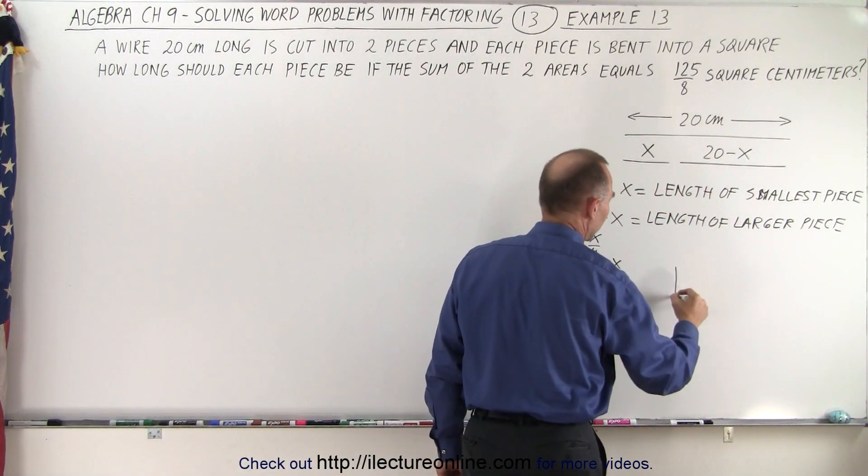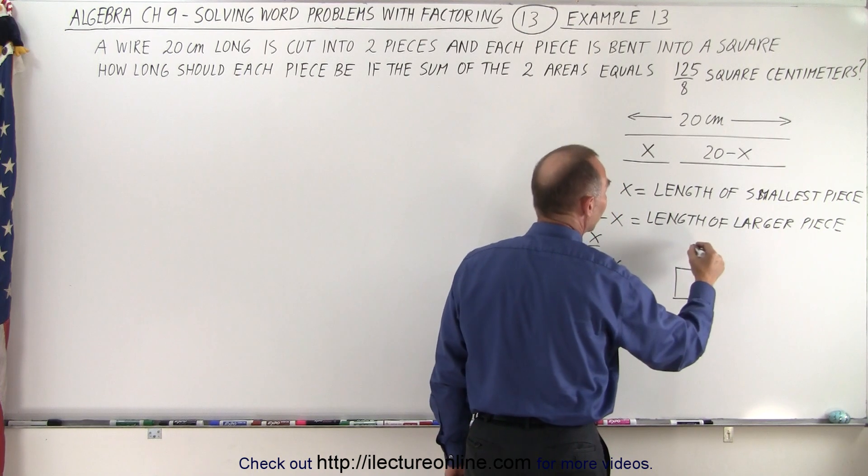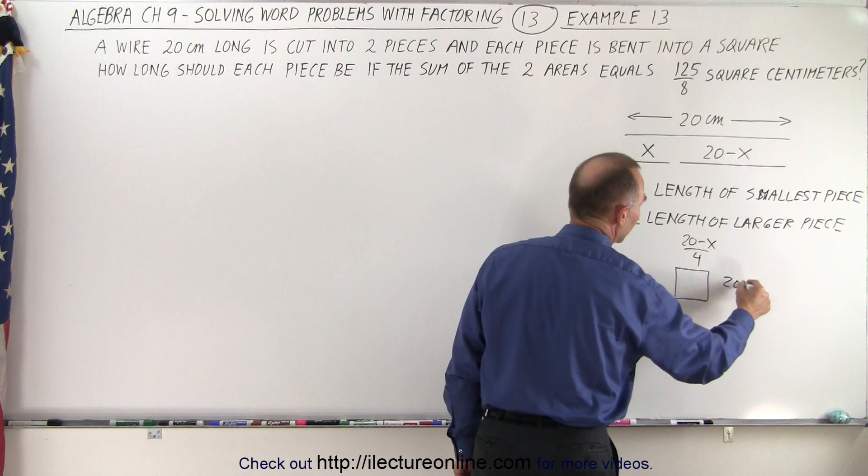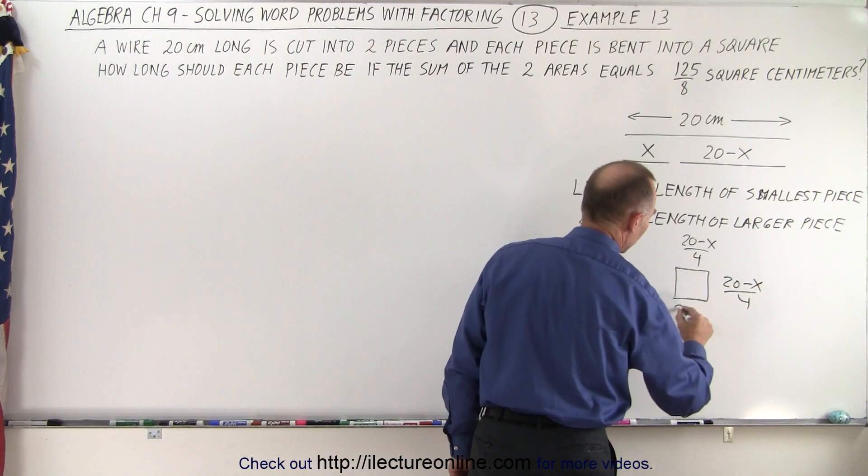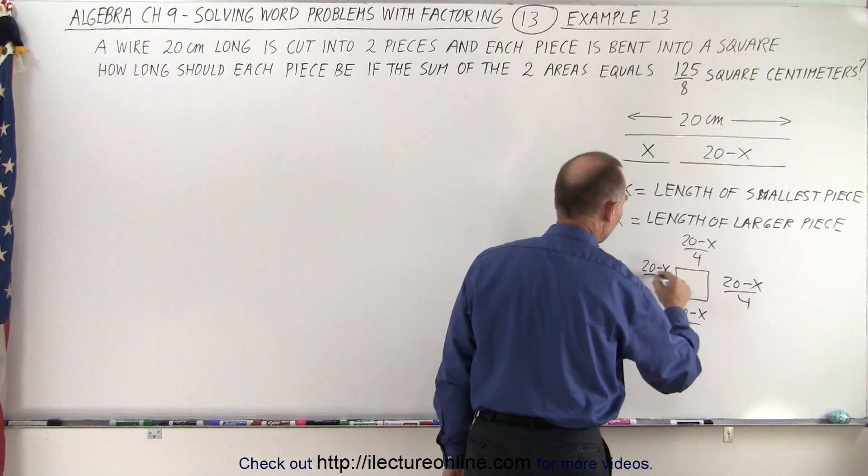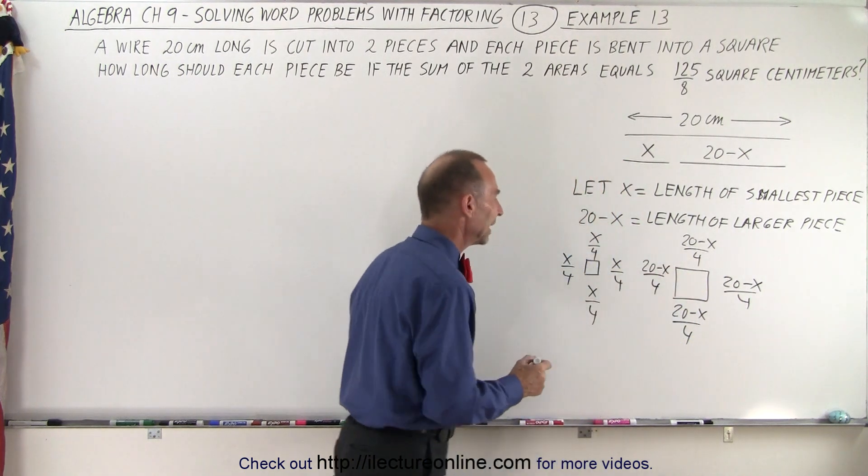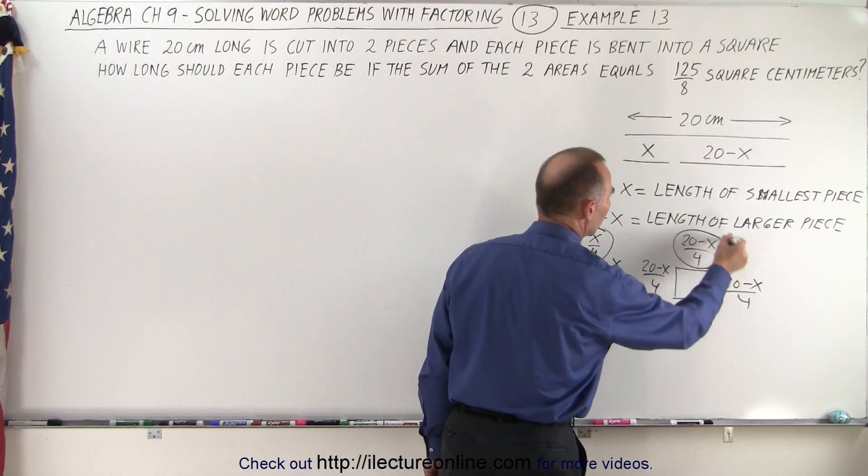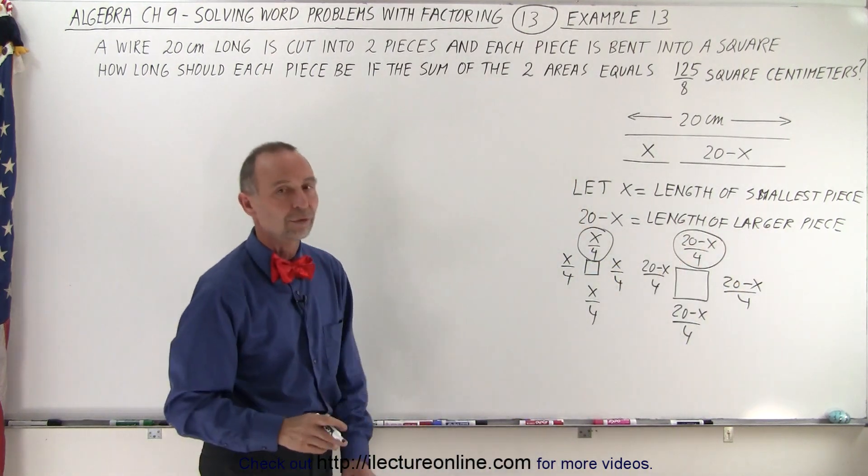The same with the square made out of the bigger piece. Each side would have a length of 20 minus x divided by 4. So we have two squares. Each side of the small square will be x over 4, and each side of the largest square will be 20 minus x over 4.